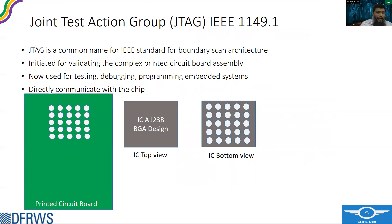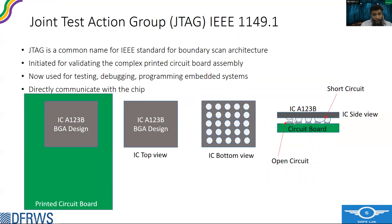A little background on JTAG. In the 1980s, when ICs were shrinking and circuit boards were getting more complex, testing of the circuits became difficult with existing approaches. For example, with a ball grid array design, the contacts are on the bottom of the IC, not the sides. When this IC is soldered onto a circuit board, conventional approaches make it very difficult to find open circuits or short circuits. Vendors came up with an idea of including circuitry within the chip to facilitate testing, and this was later standardized by IEEE as IEEE 1149.1, or boundary scan architecture.